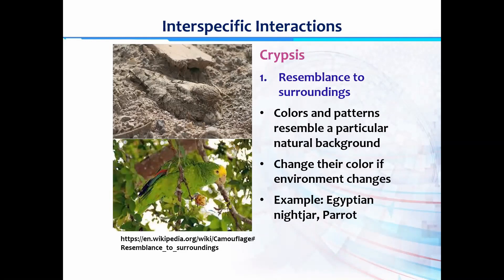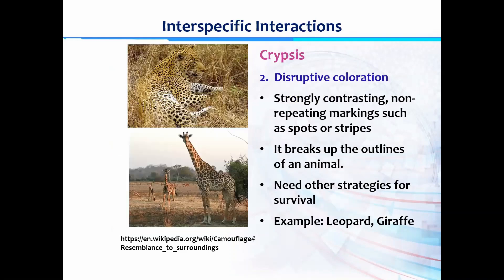For example, resemblance to the surroundings. In these images we can see the Egyptian nightjar and a parrot. The color of the Egyptian nightjar is similar to the soil, and the parrot is green in color, resembling the color of the leaves in its surroundings. These colors and patterns make these animals mix with their natural background, making it hard for predators to identify them.